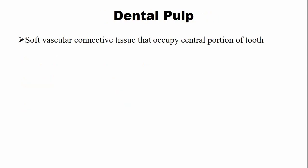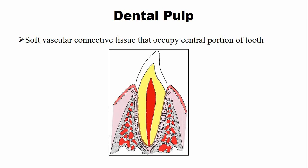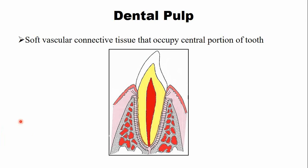Dental pulp is a soft vascular connective tissue that occupies the central portion of the tooth. This is a picture of the longitudinal section of an anterior tooth. Here you can see in the center this is the dental pulp, and the dental pulp is surrounded by the dentine both in the coronal part as well as in the radicular part. The dental pulp is divided into two main compartments.